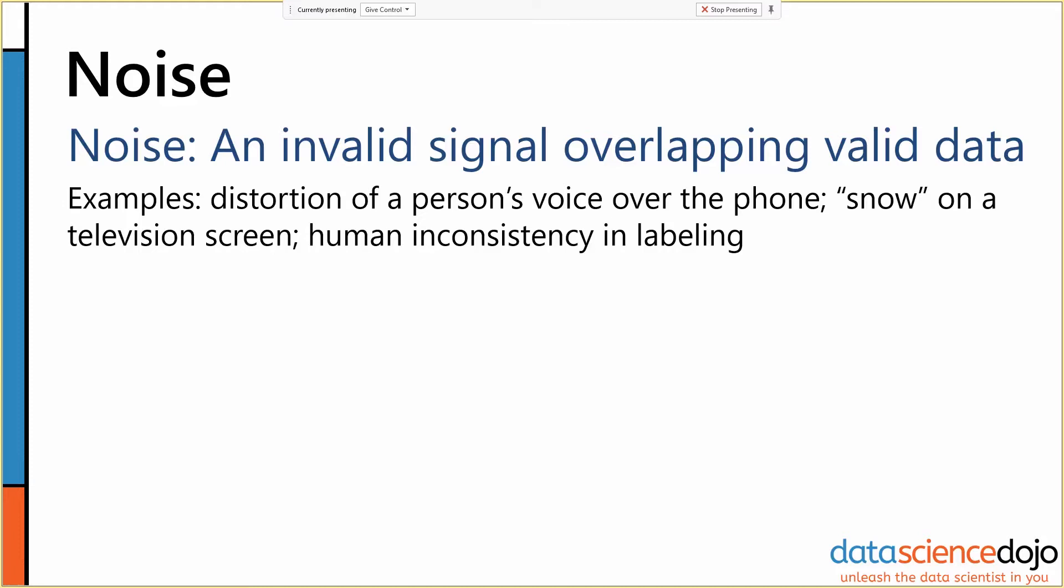This obscures our actual attribute values, and fundamentally what it means is that some of our data objects have invalid values in some of the attributes. They don't have real, they have inaccurate values there.